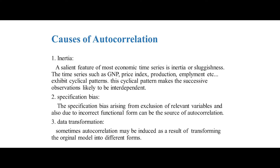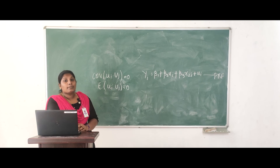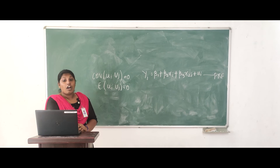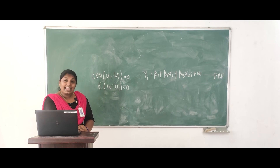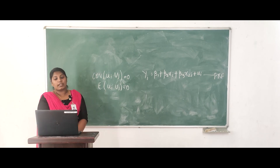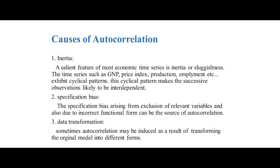The third important cause of autocorrelation is lag. In a time series regression, for example when studying consumption expenditure on income, the consumption expenditure in the current period depends upon the consumption expenditure of the previous year. So lag is a main cause of autocorrelation. Another cause is data transformation — sometimes autocorrelation may be induced as a result of transforming the original model into different forms. These are the causes of autocorrelation.